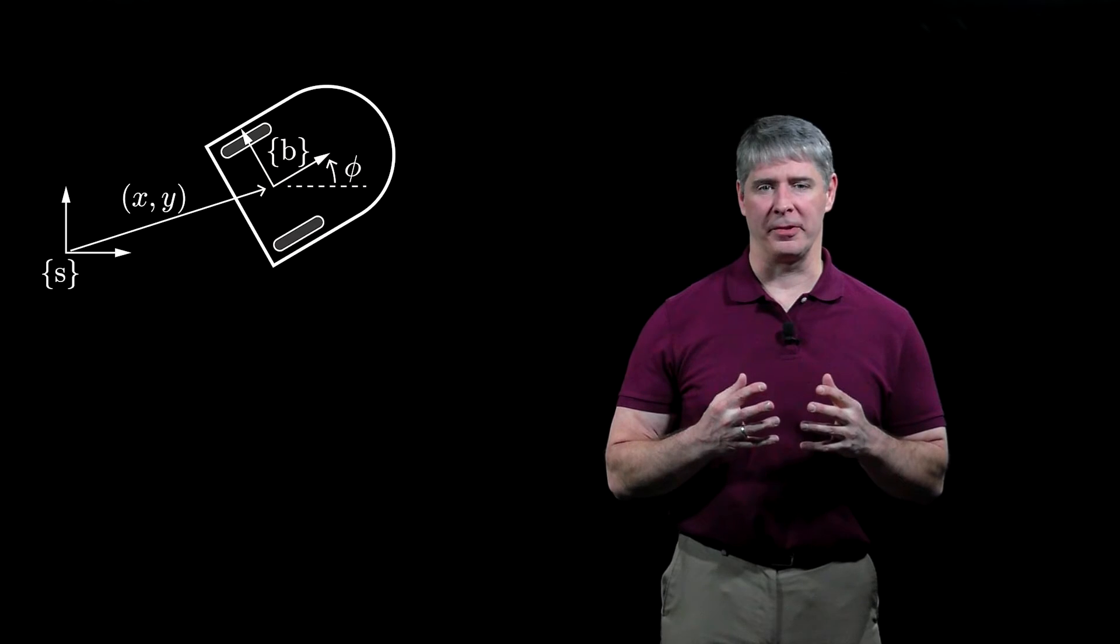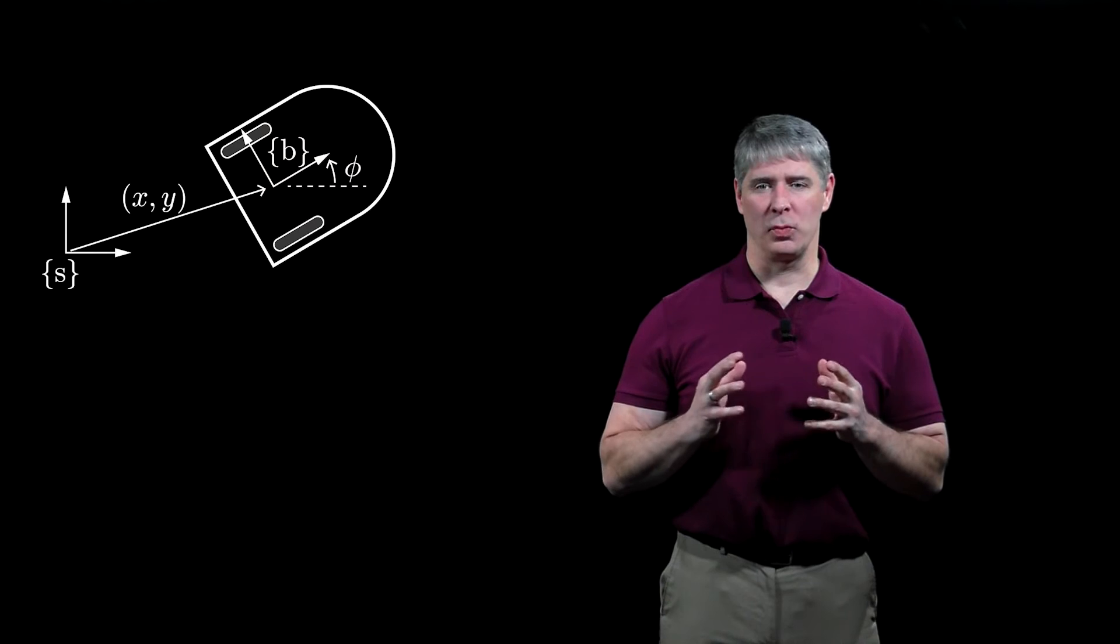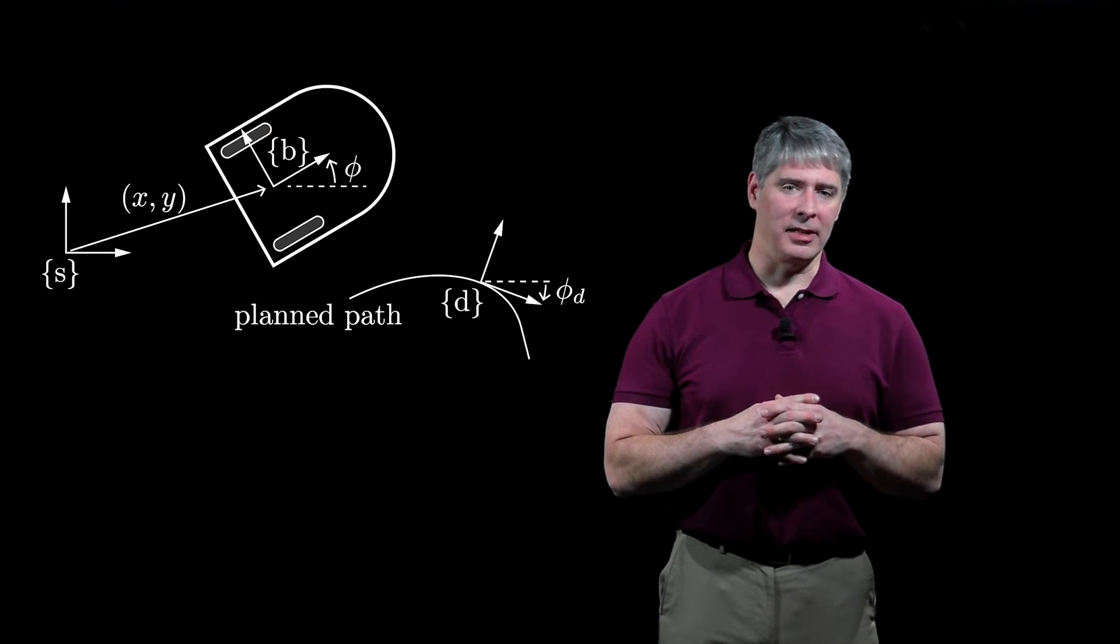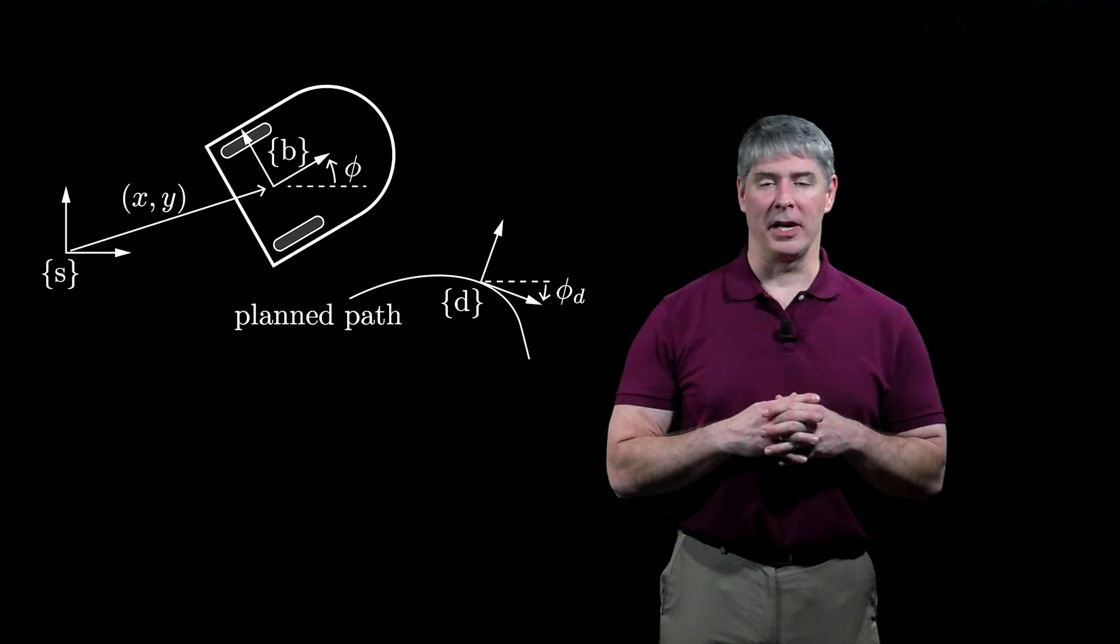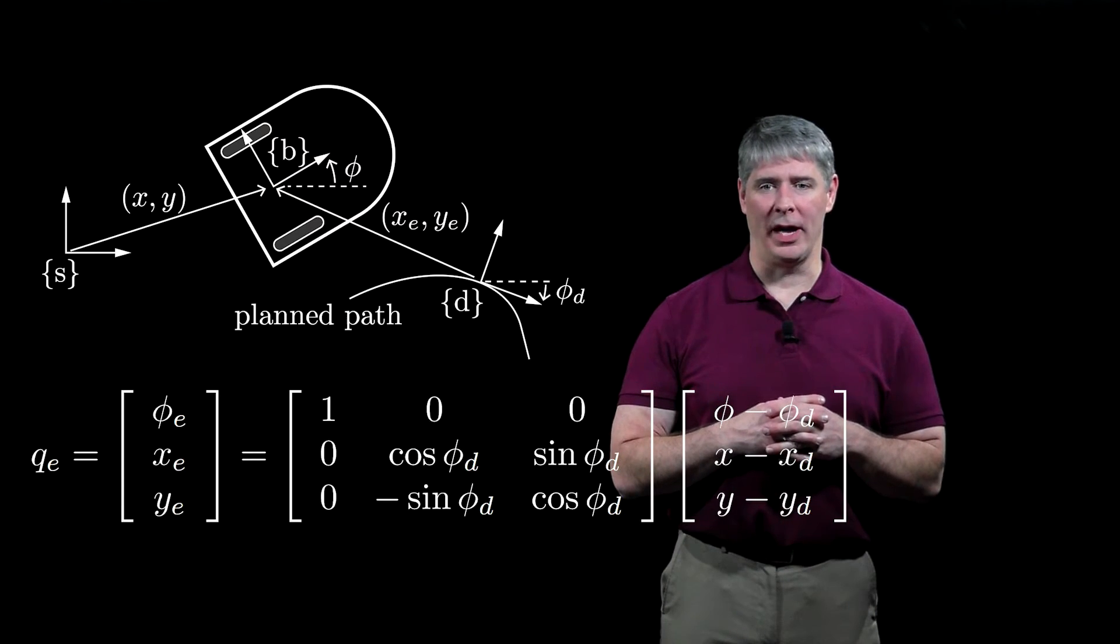To track the full configuration of the chassis, we define the configuration of the frame B midway between the wheels of the robot as phi, x, y, and the desired configuration at any instant is given by the frame D. The error coordinates are phi e, x e, and y e.